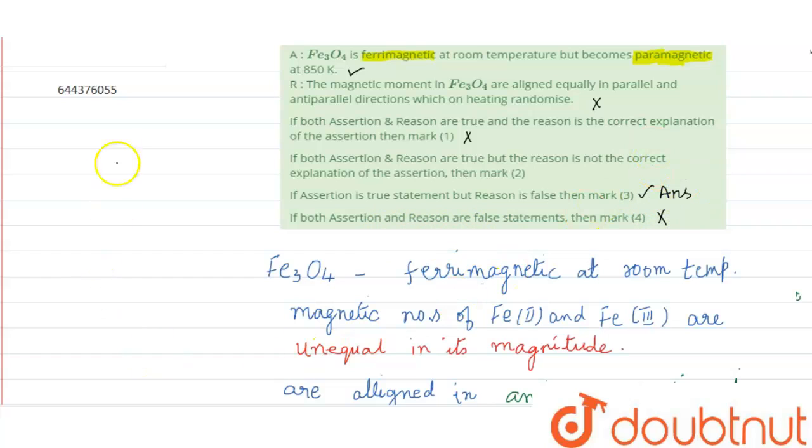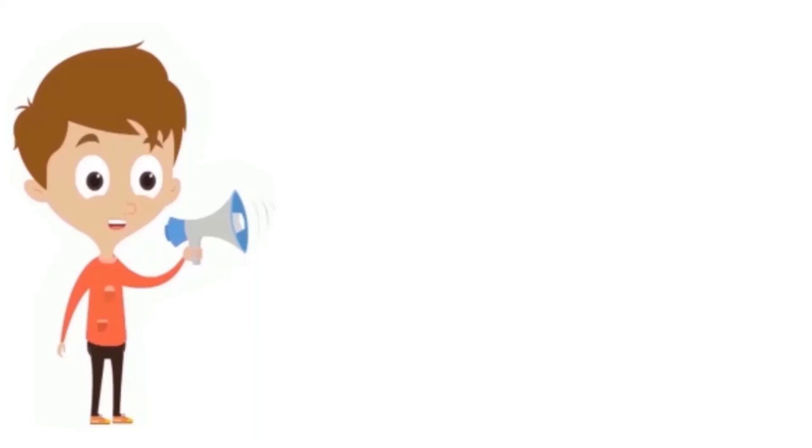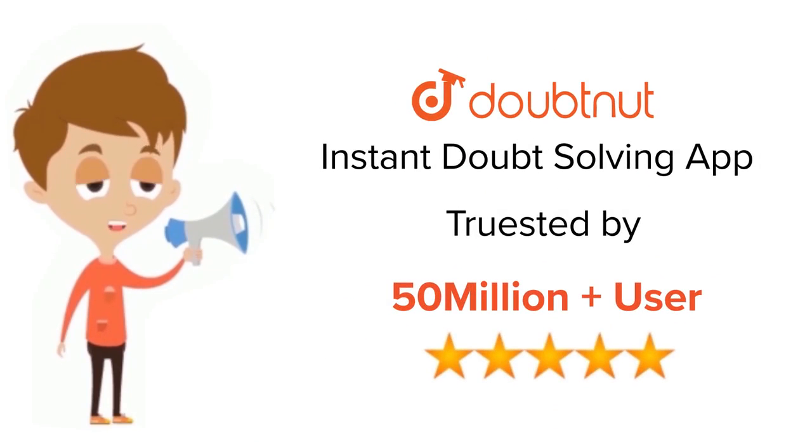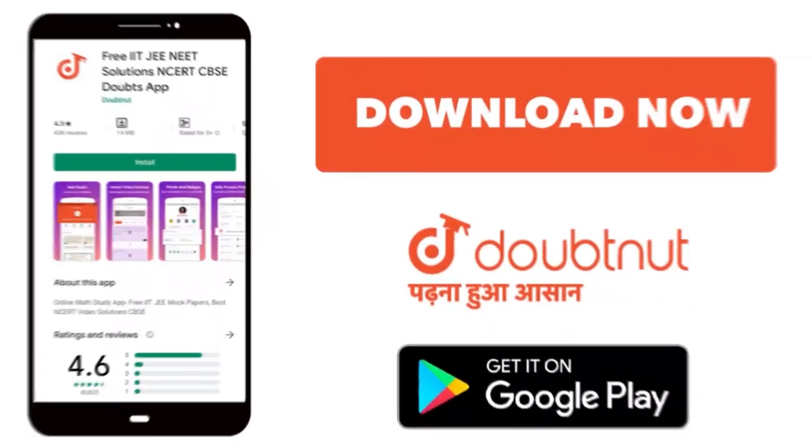I hope all of you have understood. Thank you. For Class 6 to 12, IIT-JEE and NEET level, trusted by more than 5 crore students. Download Doubtnet app today.